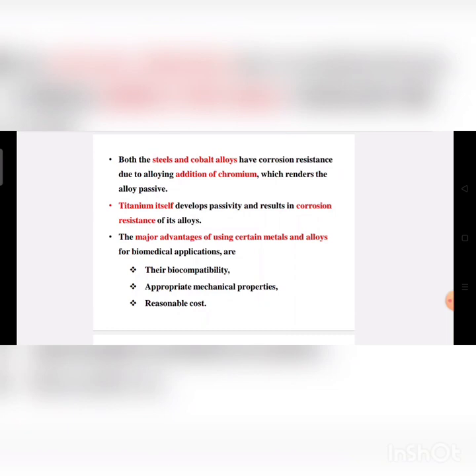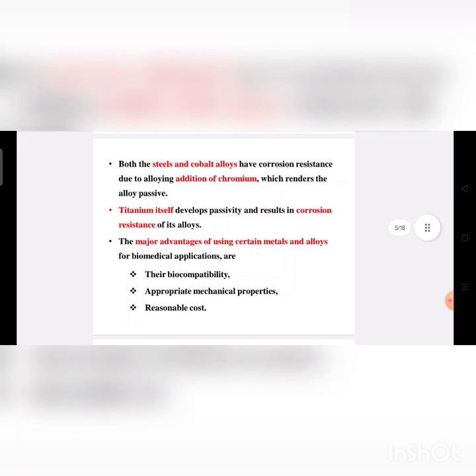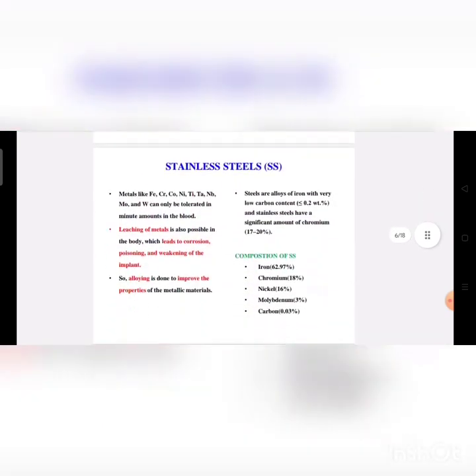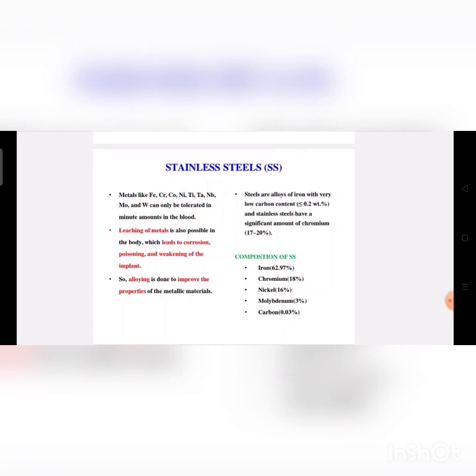The major advantages of certain metals and alloys for biomedical applications are their biocompatibility, mechanical properties, and reasonable cost. The metals iron, chromium, cobalt, nickel, titanium, niobium, and molybdenum can be tolerated in minute amounts in the blood. However, metals have the property of leaching — releasing some amount of chemical substances — which leads to corrosion, poisoning, and weakening of the implant. These are some disadvantages of metals.